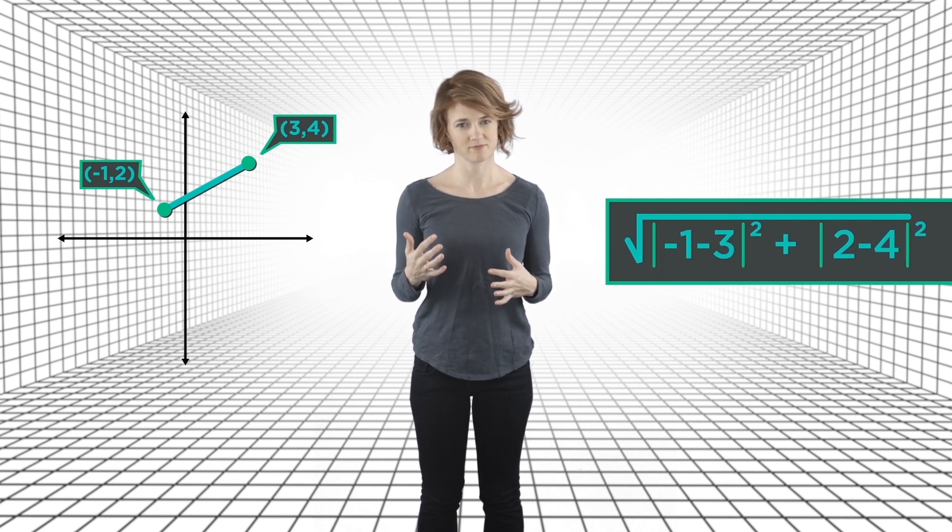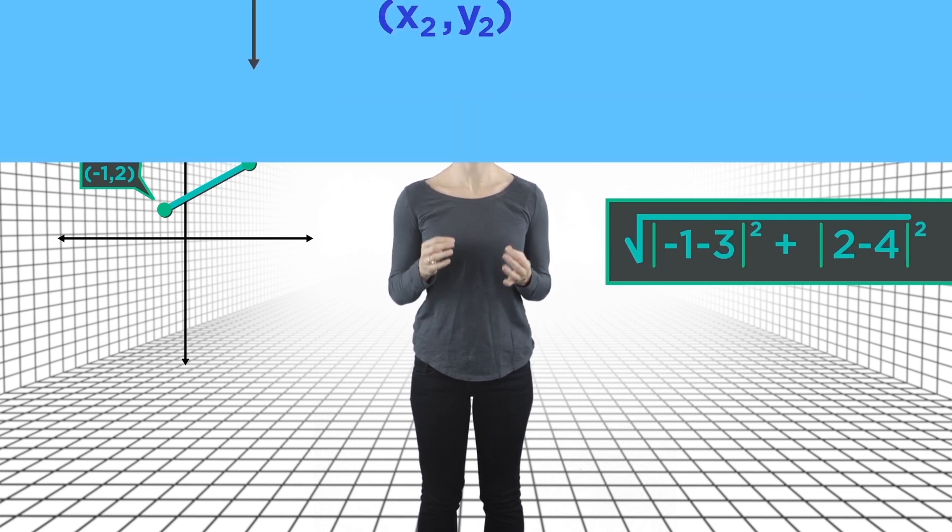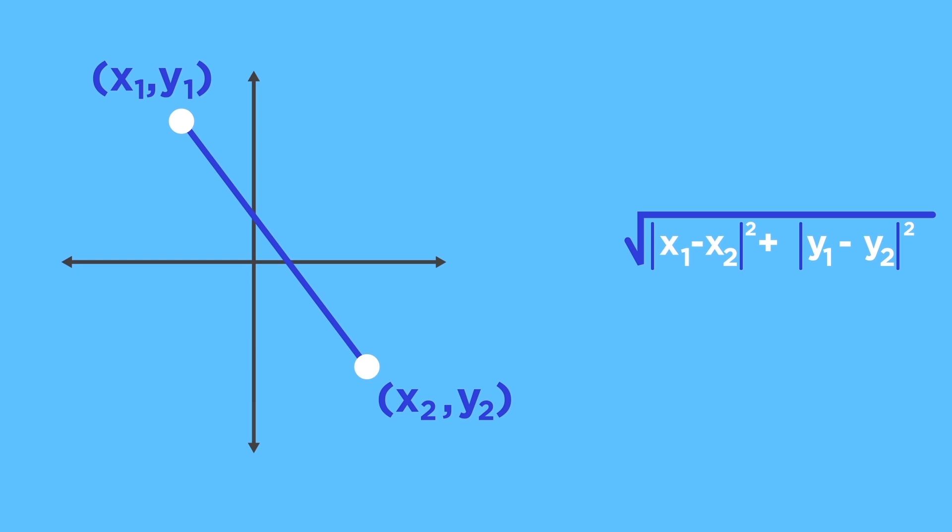The usual way to measure the distance between these two points is given by this formula. Using variables, the formula looks like this. This is the familiar Euclidean metric. Metric is just a fancy word for the way we measure distance.